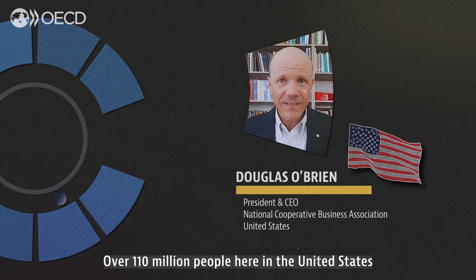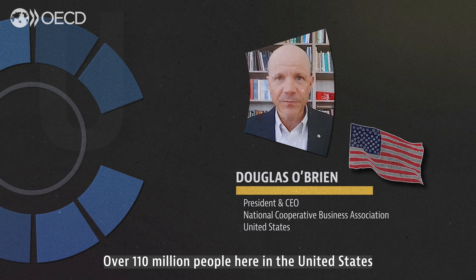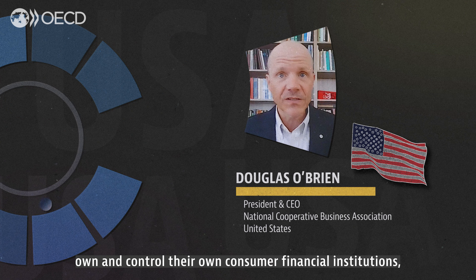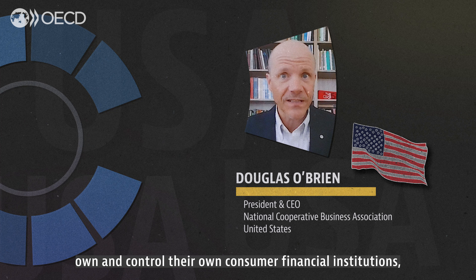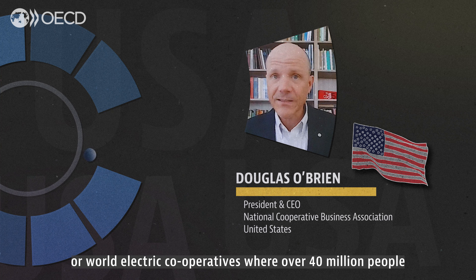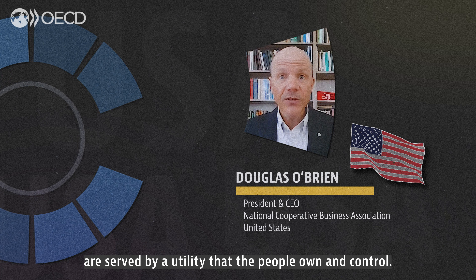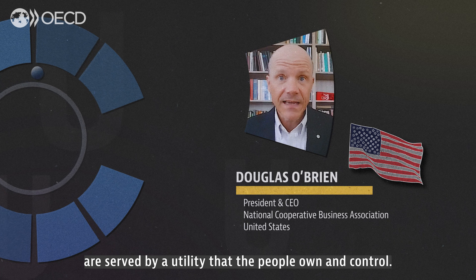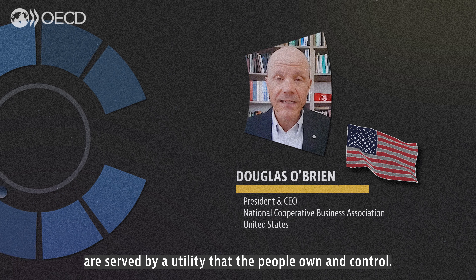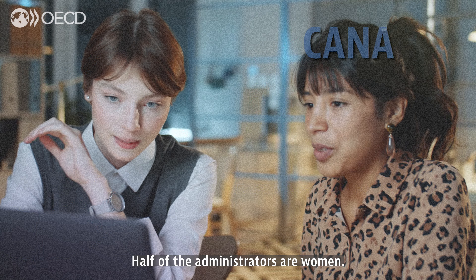Over 110 million people here in the United States own and control their own consumer financial institutions, or rural electric cooperatives, where over 40 million people are served by a utility that the people own and control.